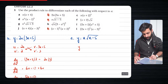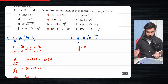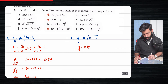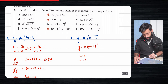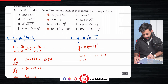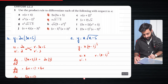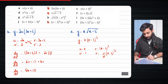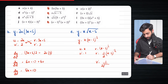Now comes part E, which is slightly more complex. Before differentiating, we have to make it differentiation-ready, so we write it as x into (x−5) to the power of one half. So u equals x, meaning u prime equals 1, and v equals (x−5) to the power half, meaning v prime equals half times (x−5) to the power of minus half.